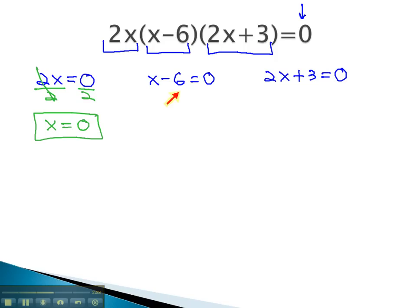We can solve the second equation by adding 6 to both sides. This gives us x equals 6. When x is equal to 6, the middle factor is 0, multiplied by the others, will always equal 0.